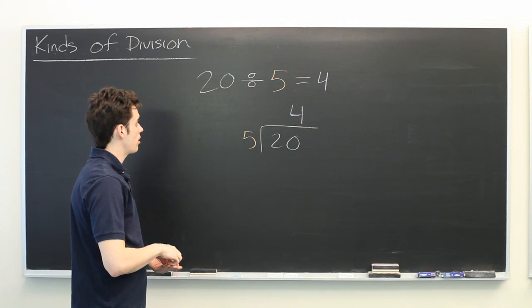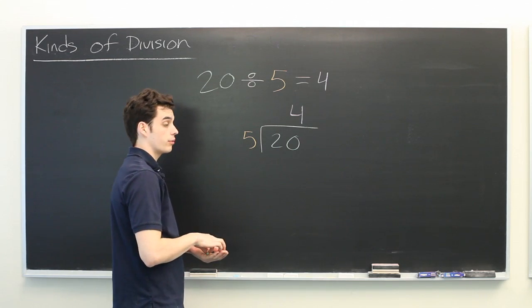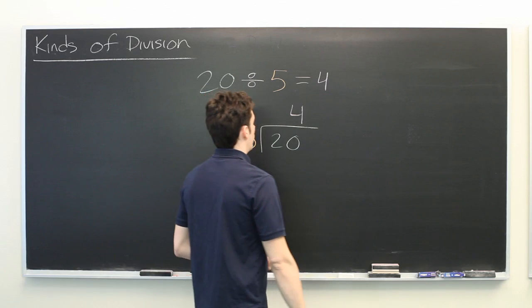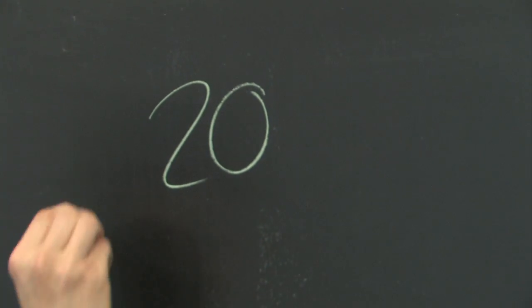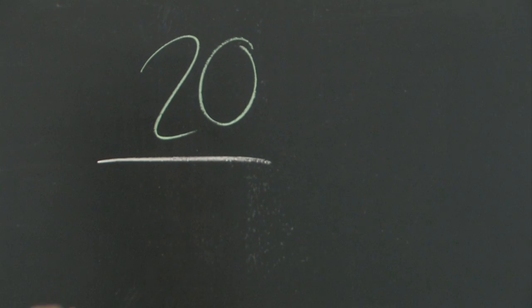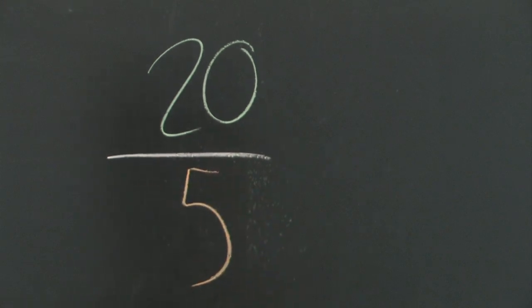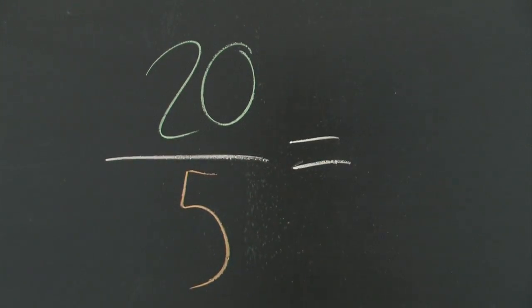But we can represent this another way if we think about it as a fraction. Twenty divided by five equals four.